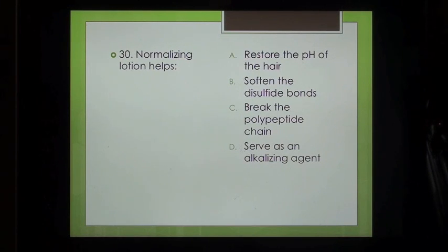Question 30: Normalizing lotion helps: A. Restore the pH of the hair, B. Soften the disulfide bonds, C. Break the polypeptide chain, D. Serve as an alkalizing agent.